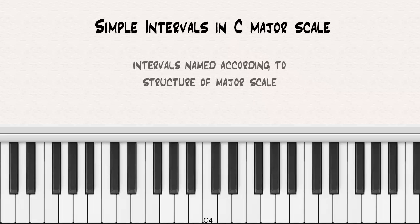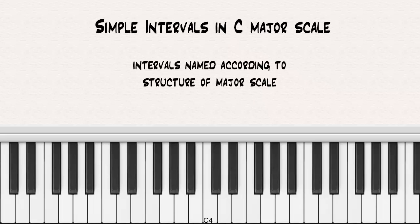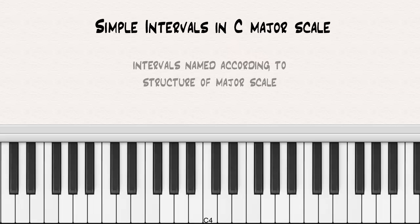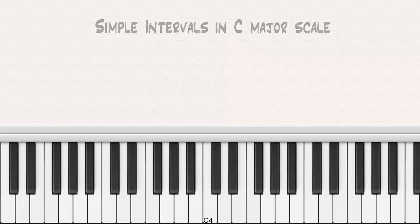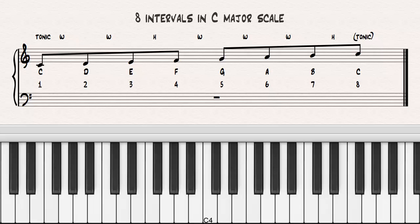The name of an interval relies on the distance between the notes according to the structure of the major scale. In this video, we will be using the C major scale as our example since it consists of all natural notes. The system of naming intervals that you learn about in this video applies consistently to all the other major scales. We will begin by naming the eight intervals that occur in the C major scale that use the first scale degree, C, as the lowest note or root note of each interval.